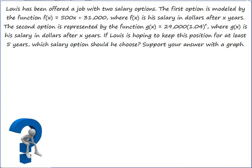And our final question today has to do with Lewis who's been offered a job, but he's been given two different salary options. The first option is modeled by the function f(x), which is 500x + 31,000. And since this is a linear equation, you can see that he starts at $31,000 and then is going to increase by $500 a year. And of course, f(x) represents his salary in dollars after x number of years.